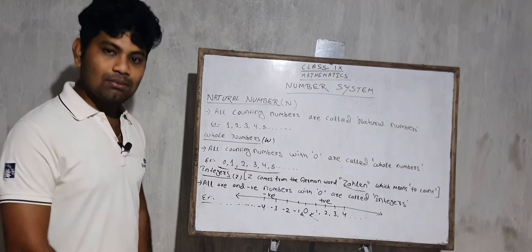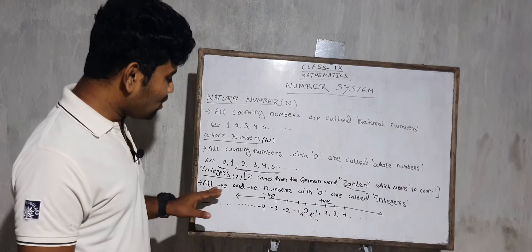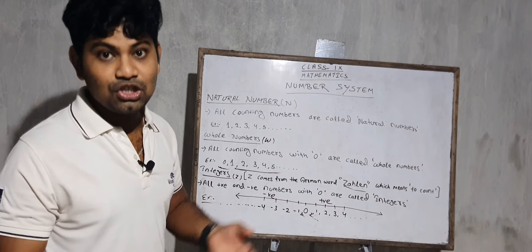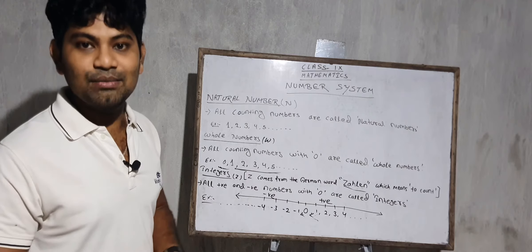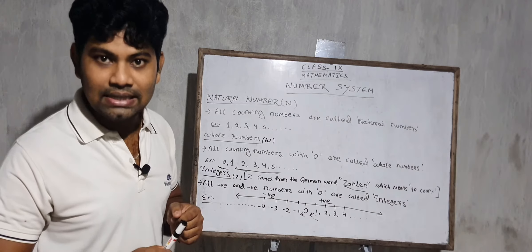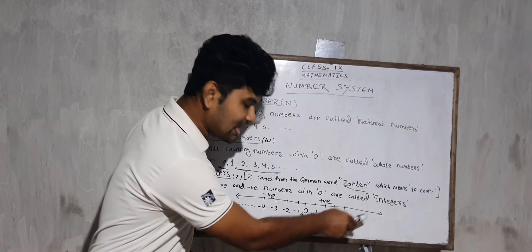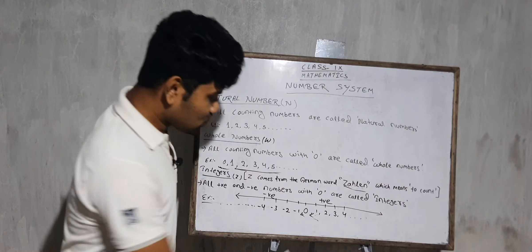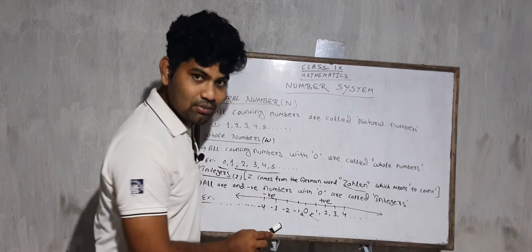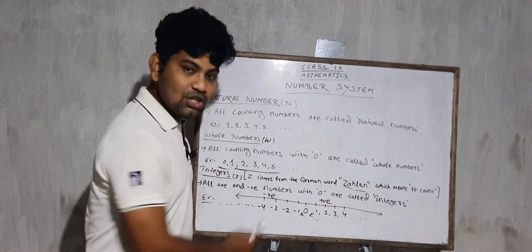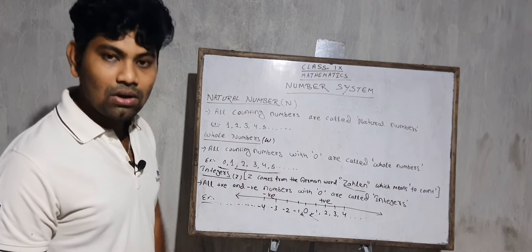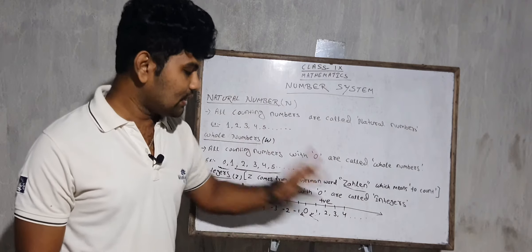Now come to integers. What are integers? All positive and negative numbers with zero are called integers. Positive numbers are those greater than zero: 1, 2, 3, 4, up to infinity — these are called positive numbers. And minus 1, minus 2, minus 3, minus 4, up to infinity — those less than zero are called negative numbers.